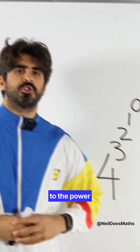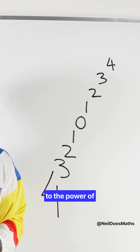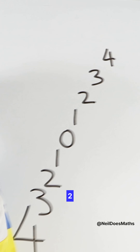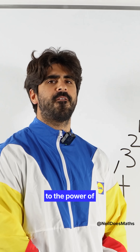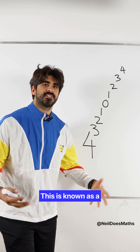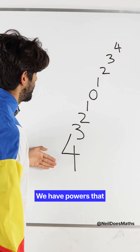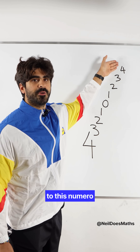Do you know the value of 4 to the power of 3 to the power of 2 to the power of 1 to the power of 0 to the power of 1 to the power of 2 to the power of 3 to the power of 4? The answer is very simple. This is known as a power tower — we have powers that ascend all the way up.